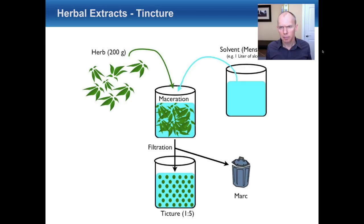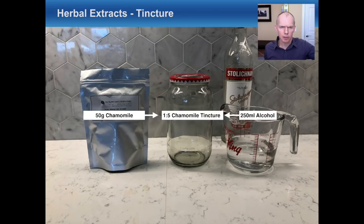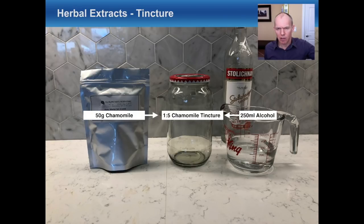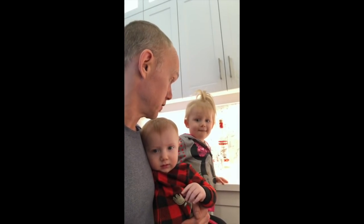To demonstrate tincture-making: for a chamomile tincture, use a 50-gram bag of chamomile and 250 milliliters of vodka, giving a 50g-to-250g one-to-five ratio. With flowers, it's difficult to achieve a more concentrated extract because of the volume they take up, so grinding the flowers or packing them down tightly is recommended.